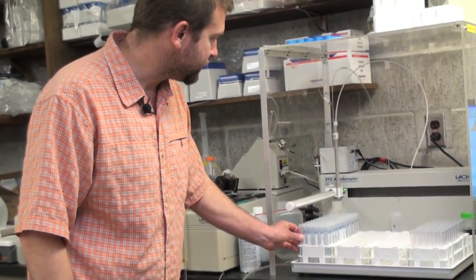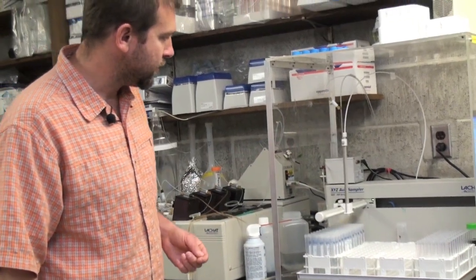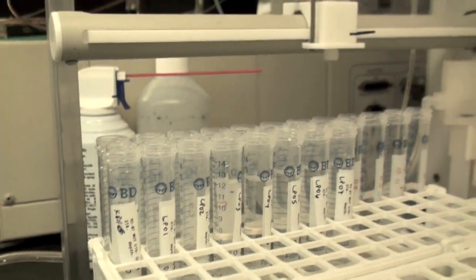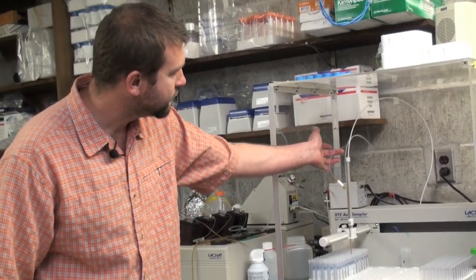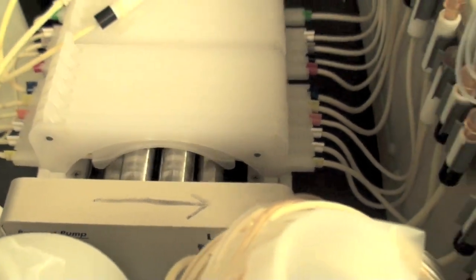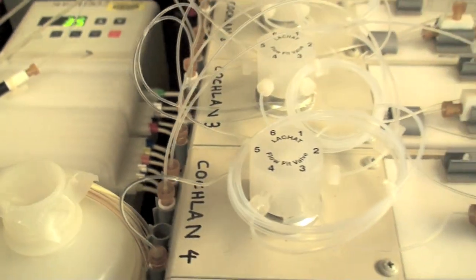Put the sample on this rack, the robotic auto sampler will come over and it will pick up a small amount of the sample and it will push it through these lines all the way through this pump and as the water sample is loaded onto these channels.